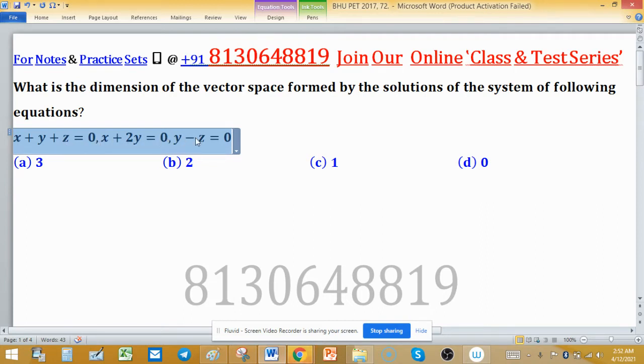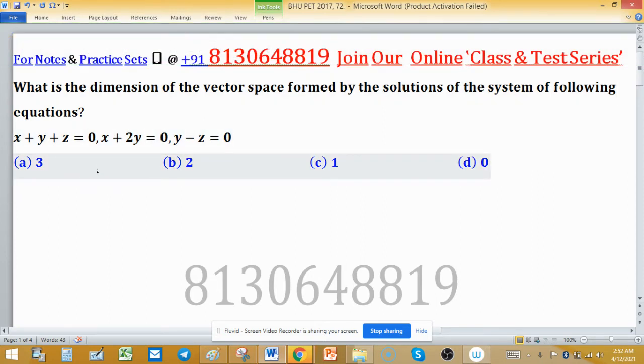y - z = 0. So whenever a system is given to us, always try to write the augmented matrix because the right-hand side is zero, meaning this system is Ax = 0.